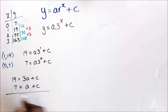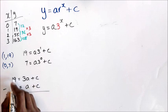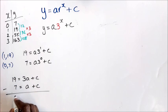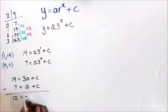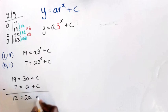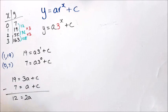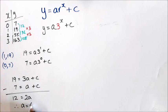Subtracting: 19 minus 7 is 12, and 3a minus a is 2a. The two c's cancel, so a equals 6.